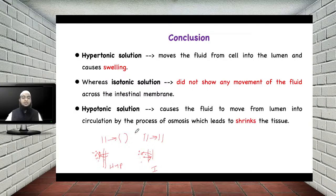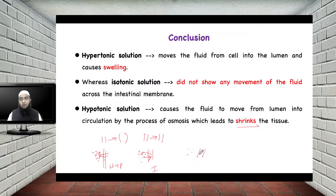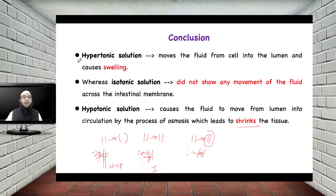In the case of the third solution — hypotonic solution — it causes fluid to move from the lumen into the circulation by the process of osmosis, which leads to shrinkage of the tissue. Hypotonic solution means less salt concentration in the lumen. Since salt concentration is more inside the cell, water moves from the lumen to the cells. As a result, if originally the tissue was a certain size, after 20 minutes due to movement of water, the size reduces and there is shrinkage of that particular tissue. This is the logic of why hypertonic solution helps in constipation — it withdraws water through osmosis and helps in evacuation of the feces from the bowel.